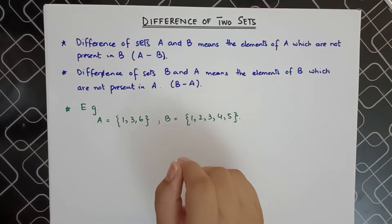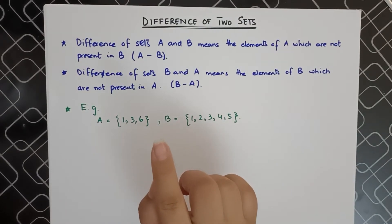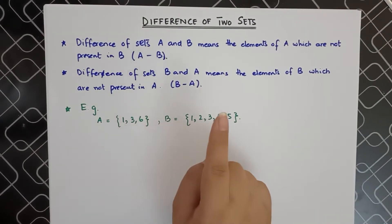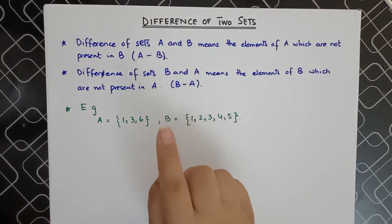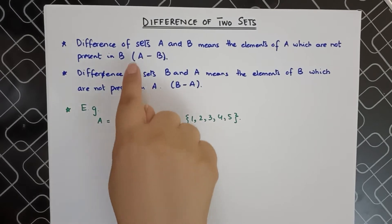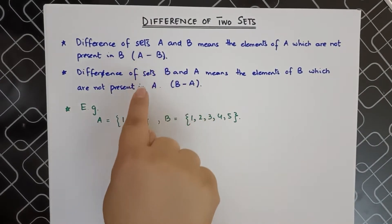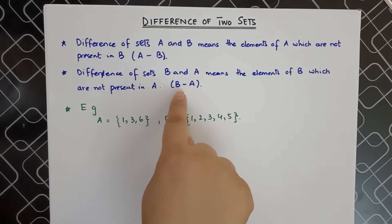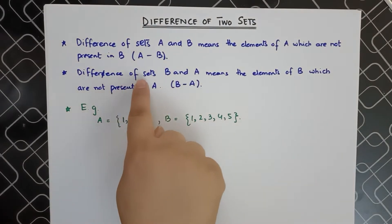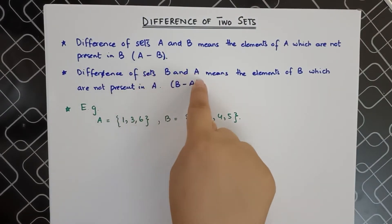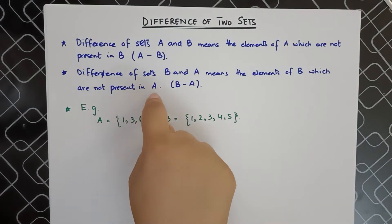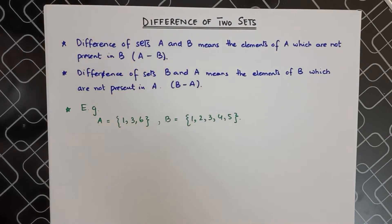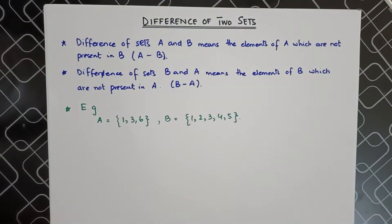When we talk about the difference of sets A and B, it means the elements of A which are not present in set B — hence A minus B. When we talk about B minus A, it means the elements of B which are not present in set A.